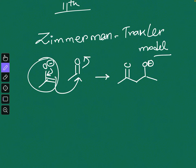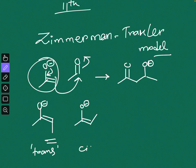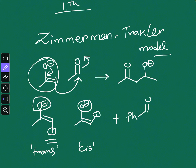If you have a symmetrical ketone you don't have any problem, but if stereochemistry is involved — for example if you have a substituent group — then you can have two options: you can have a trans enolate or a cis enolate. In the trans enolate the methyl group is trans to the O⁻, and in the cis enolate it is cis to the O⁻. So depending on whether you use the cis or trans enolate with, say, benzaldehyde, the outcome of the reaction will be different.